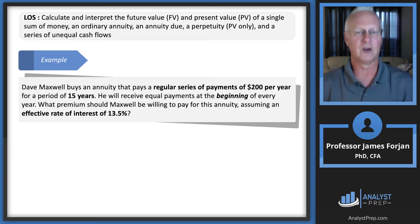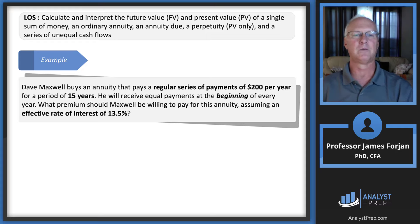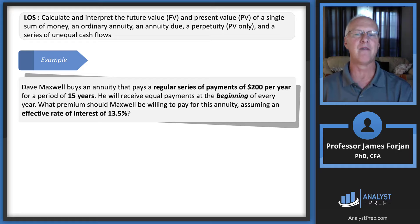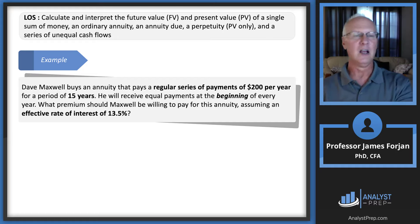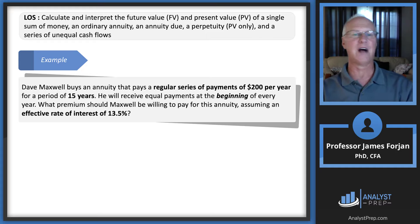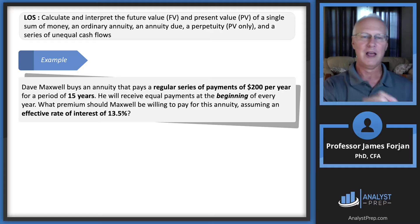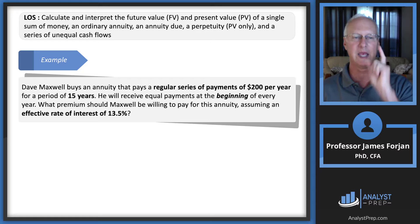Dave buys an annuity of $200 per year for 15 years, receiving equal payments at the beginning of every year. What premium should he pay assuming 13.5%? The key signal: 'beginning of every year' means annuity due. Using the formula we get $1,430. On the calculator, switch to begin mode, then enter the same inputs as usual: N = 15, I/Y = 13.5, PMT = 200, PV = 0, compute FV — or solve for PV — and get $1,430. On the exam, watch for 'beginning one year from today' (ordinary annuity) versus 'beginning today' (annuity due).